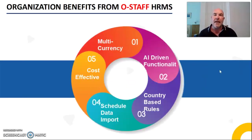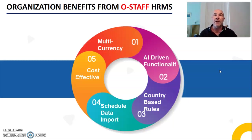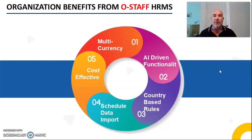OStaff has multi-currency integrated into its payroll. This means if you have locations around the globe, you only have to input the currencies for those departments once and it automatically works out where staff are located. It has an artificial intelligence driven functionality — everything within OStaff has been built with AI integrated. All departments communicate with each other automatically, so there is no manual data entry because information seamlessly flows across all managerial services.